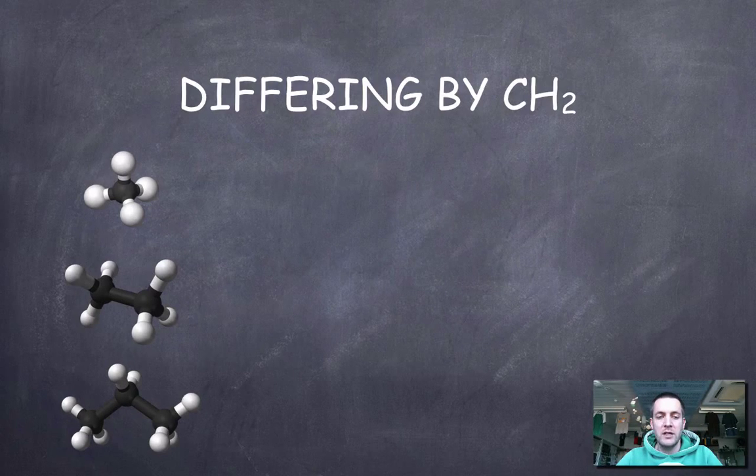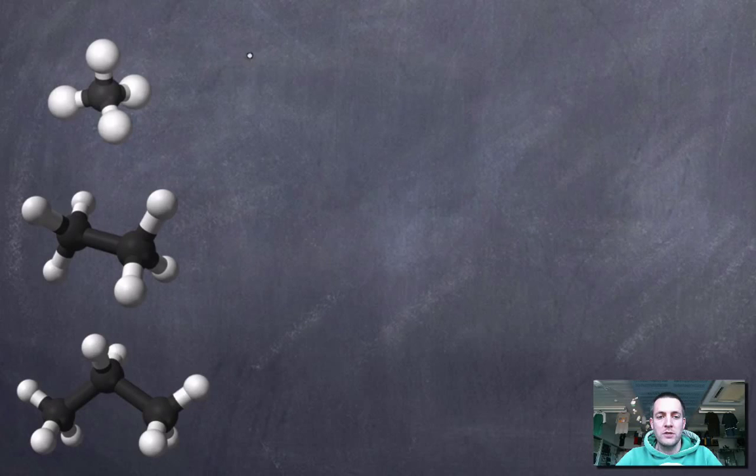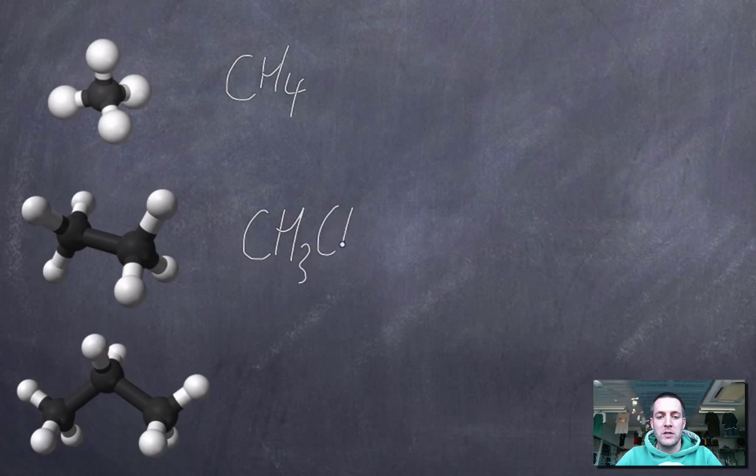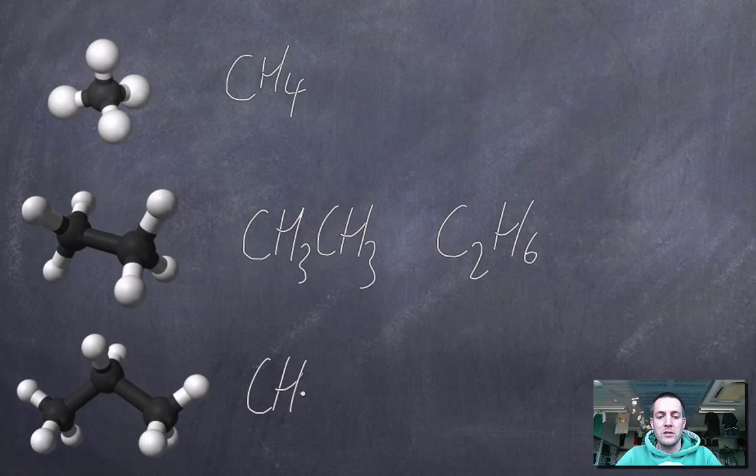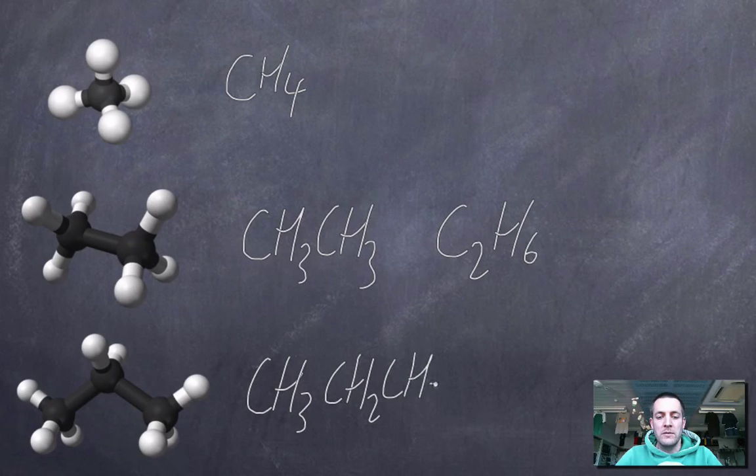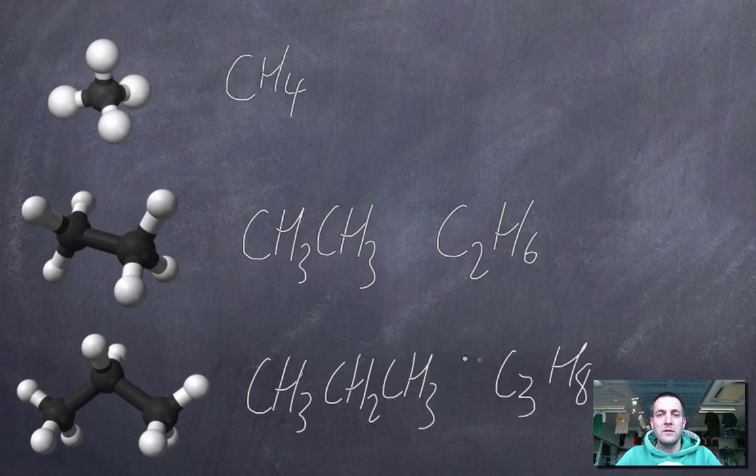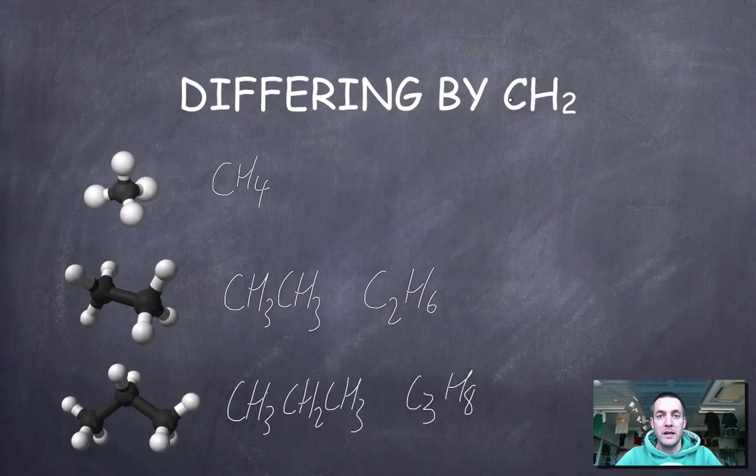Once again, just to illustrate this differing by CH2 thing, here we've got CH4. This is called methane. These are actually all alkanes, but we'll look at alkanes in more depth later. This can be written as CH3 joined to CH3, or as I wrote on the previous slide, C2H6. And this one could be written as CH3, CH2, CH3, or in other words, C3H8. Lots of different ways of representing compounds, but what you can see is that as the chain gets longer by one carbon each time, the number of carbons increases by one, but the number of hydrogens increases by two. So the members of a homologous series will differ by CH2 from the next one in turn.